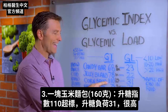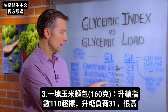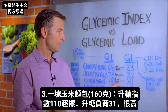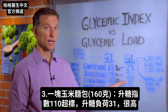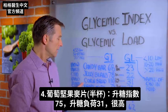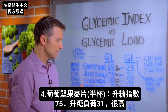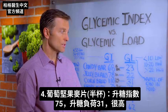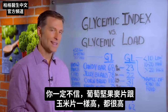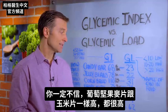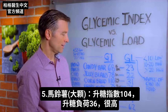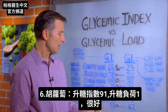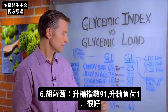Cornbread is 110 on the glycemic index — that's off the charts — for a 160-gram piece. The glycemic load is 31, which is pretty high. Grape Nuts cereal is 75 for a half cup, with a glycemic load of 31 — you wouldn't think that would be so high. A large potato is 104 on the glycemic index with a glycemic load of 36 — that's pretty high. The carrot, by contrast, is 91 on the glycemic index but has a glycemic load of just one, so that would be fine.